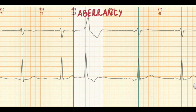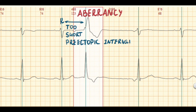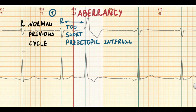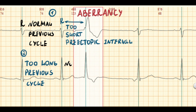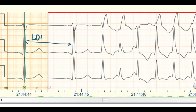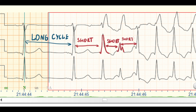There are three main conditions that lead to aberrant conduction: first, a short pre-ectopic interval relative to the previous R-R interval; second, a long previous R-R interval relative to the next normal R-R interval; and third, a critically fast rate where the R-R interval is too short and the next stimulus arrives before the end of the refractory period of the previous cycle.